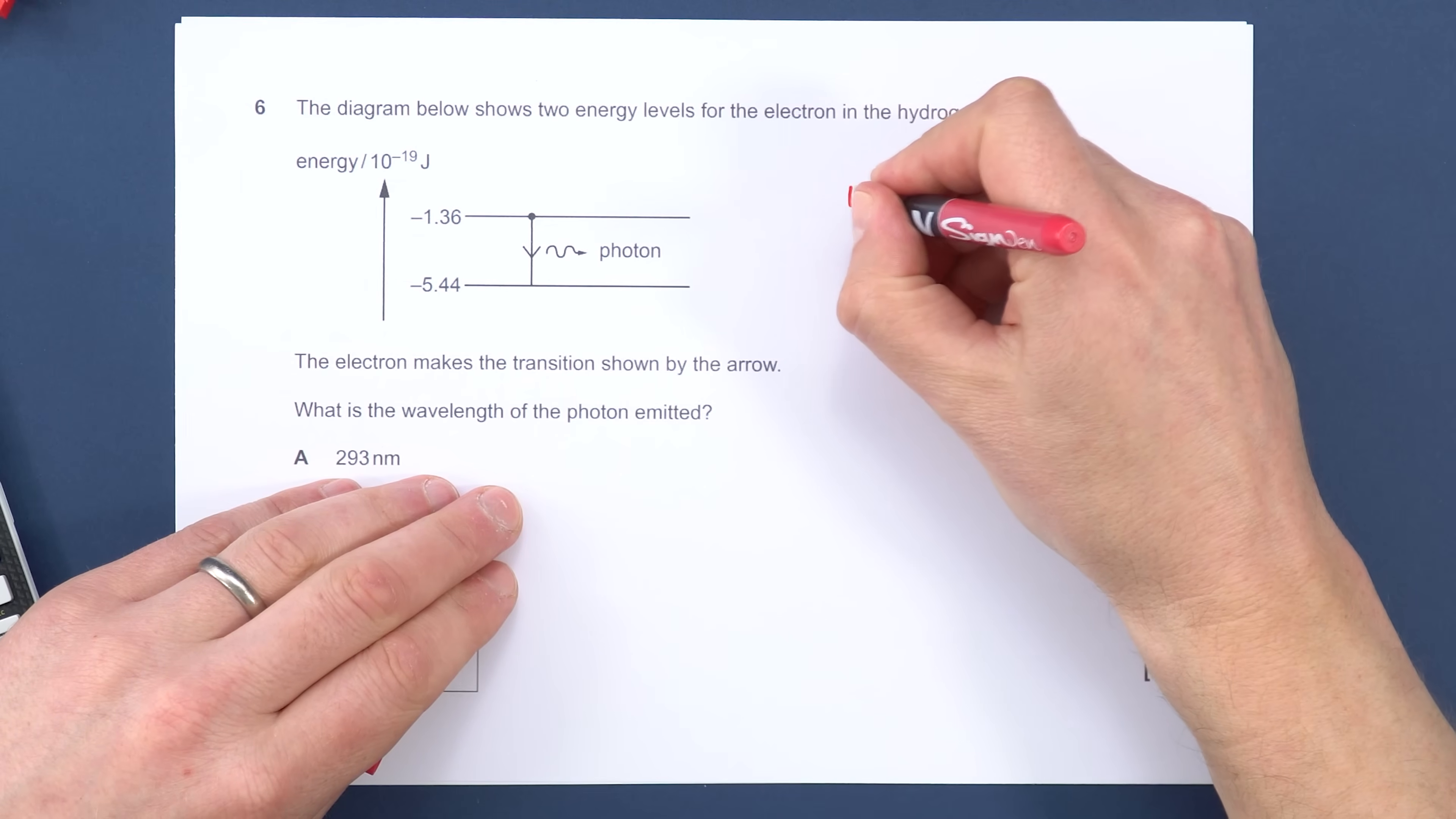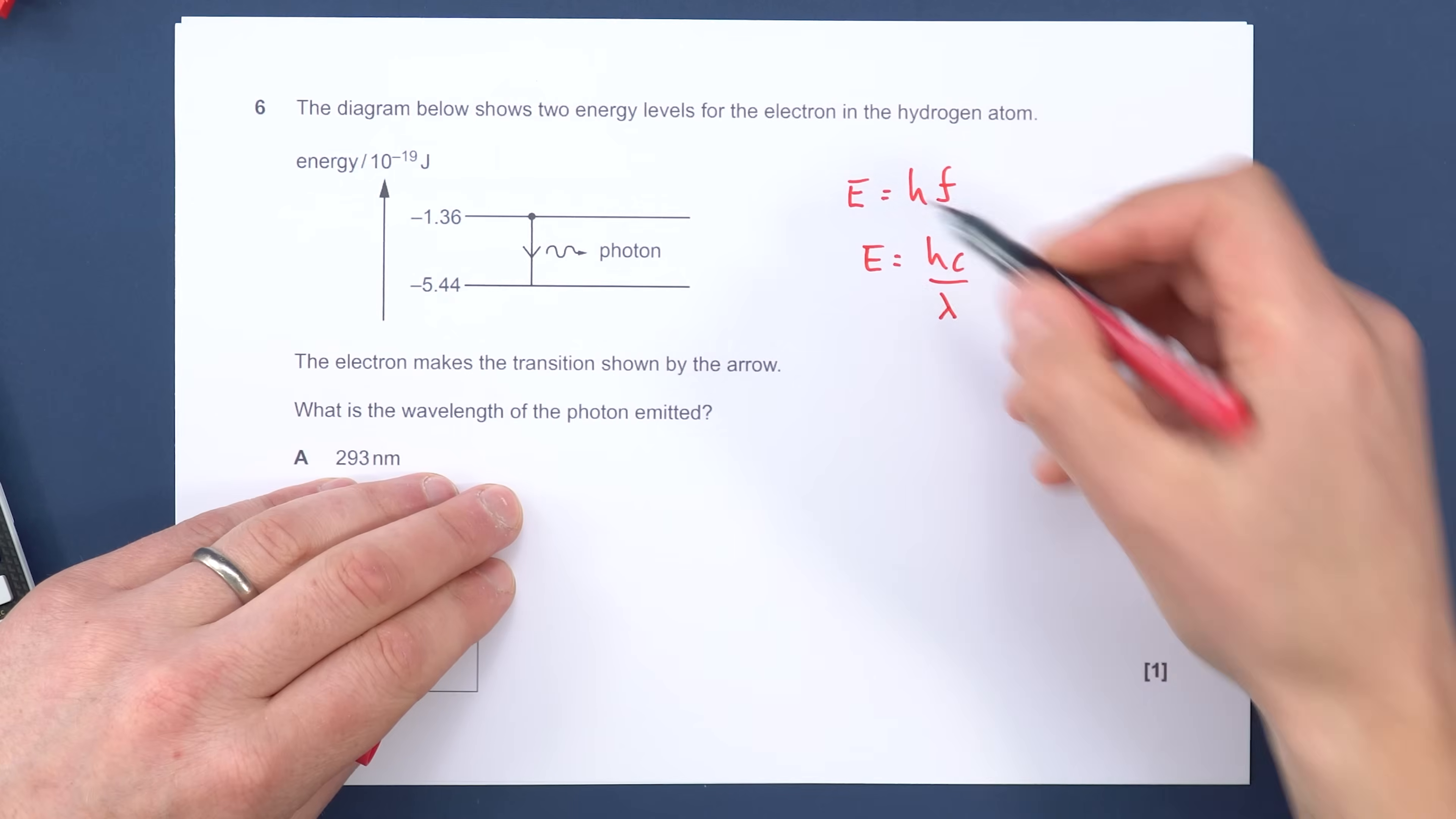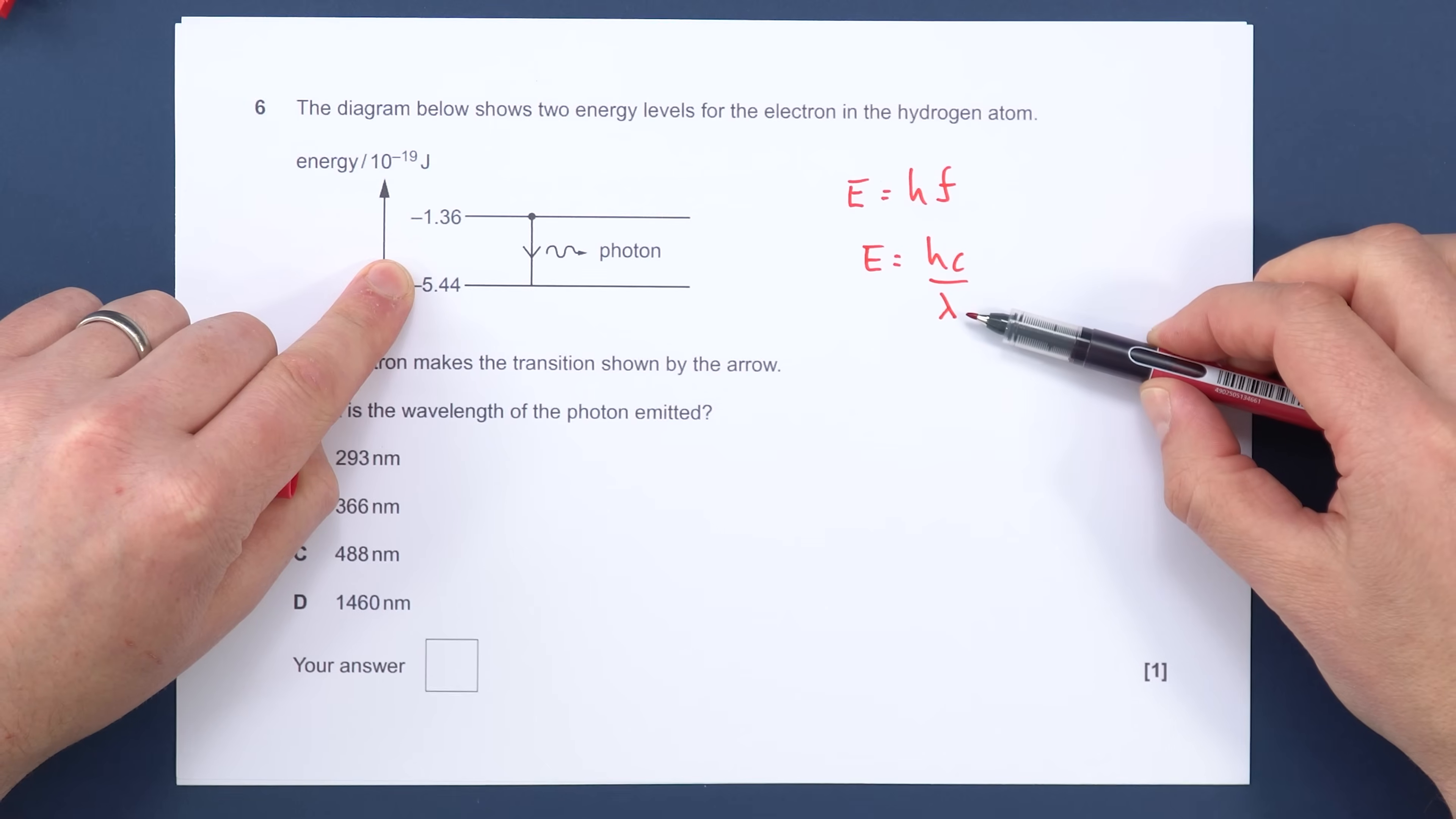Even though it's multiple choice, I would still say you need to write down an appropriate equation. Here, we can look at how the energy is related to the frequency, or indeed the energy is equal to hc over lambda. We know the energy from the question, or we can look at the change in energy. We know the value of Planck's constant, we know the speed of light, and therefore we can use this to work out the wavelength.